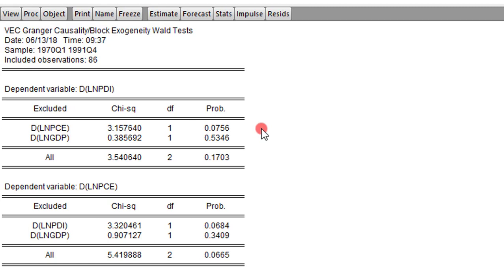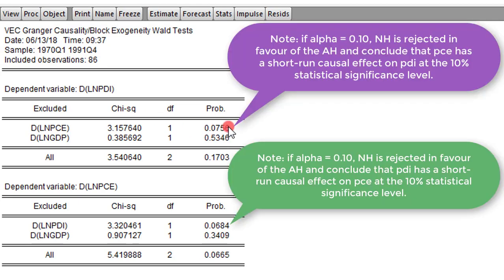The null hypothesis is that there is no Granger causality, against the alternative that the null is not true. Our rejection criteria is that we reject the null hypothesis if the p-value of the chi-square statistic is below 0.05. From what we can see, the p-values here are well above 0.05, so we conclude that PCE does not have any short-run causal relationship with PDI. Also, GDP does not have any causal effects in the short run on PDI. Jointly, both variables have no short-run causal effects on PDI.